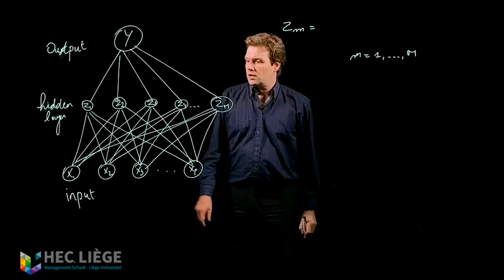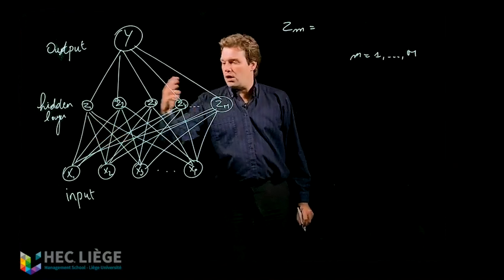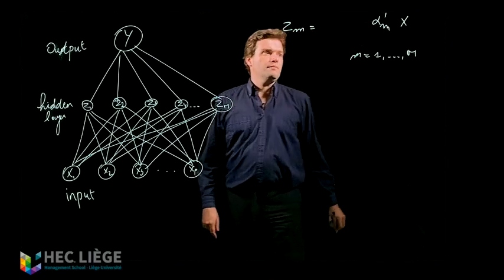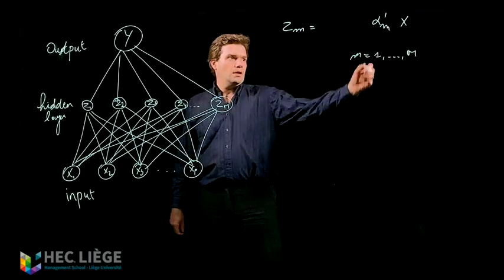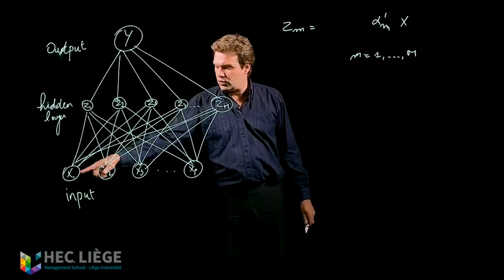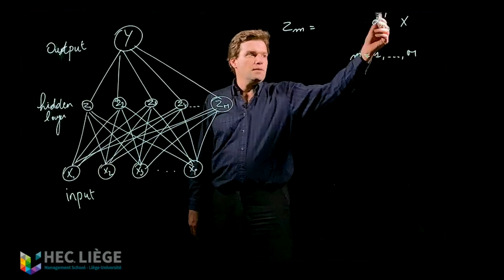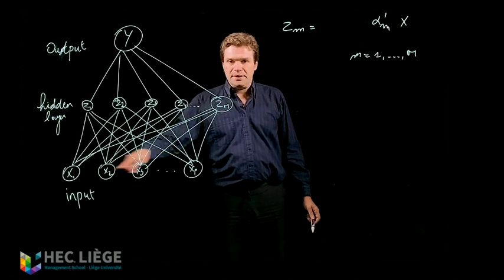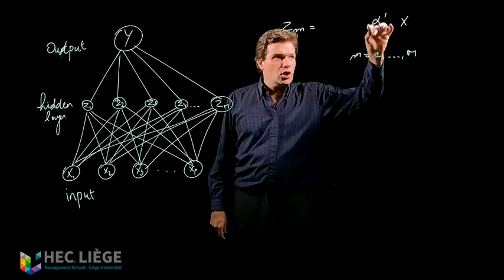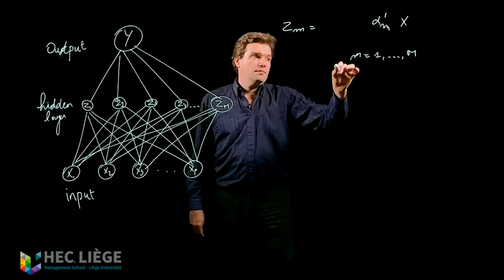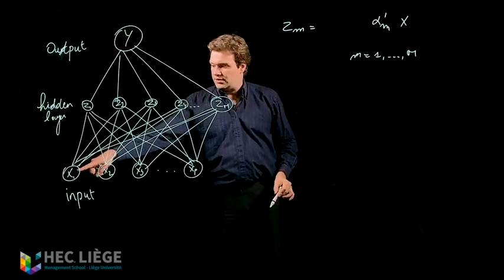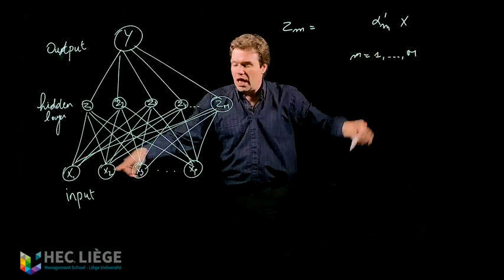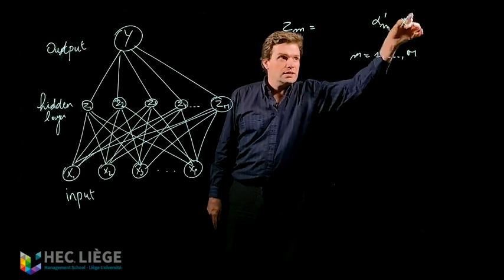What is zm? zm is going to be a combination of the covariates. I put that as alpha_m transpose times x, where x is a vector of covariates corresponding to x1, x2, x3, ..., xp. It is multiplied by the row vector of size p, which corresponds to coefficients alpha_m1, alpha_m2, ..., alpha_mp — that is, alpha_m1·x1 plus alpha_m2·x2 plus alpha_m3·x3, and so on. This is what is inside this expression.